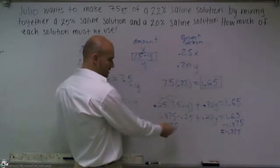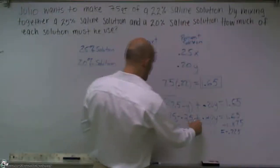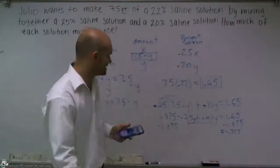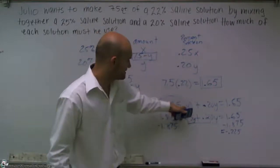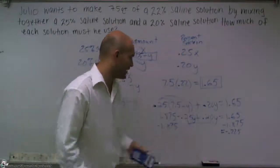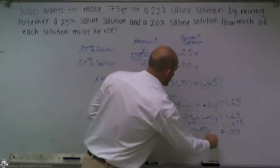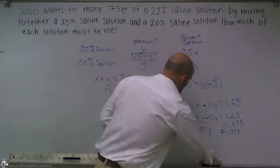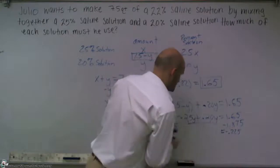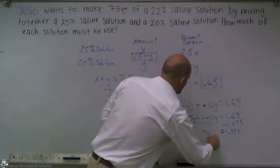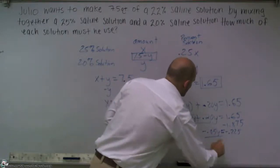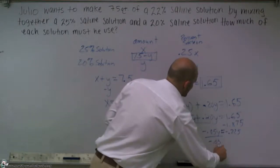So when I combine these two together, 0.25 times negative y is a negative 0.25y. When I combine them, I get a negative 0.05y. So I get negative 0.05y divided by negative 0.05 on both sides.